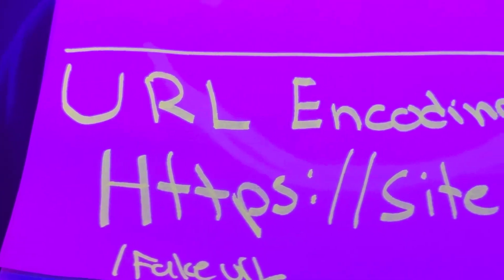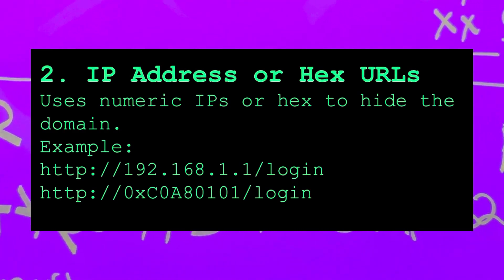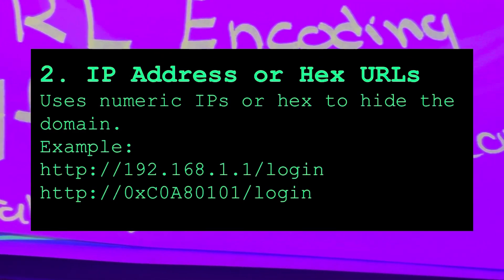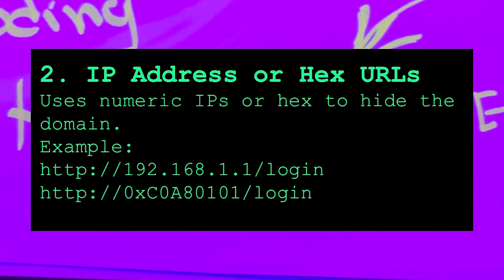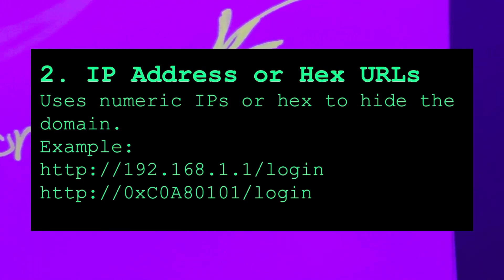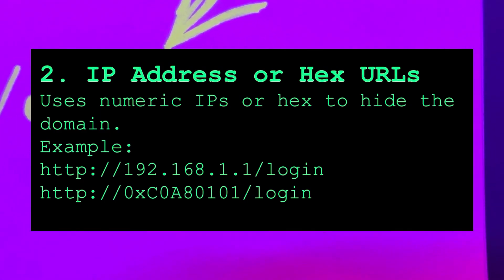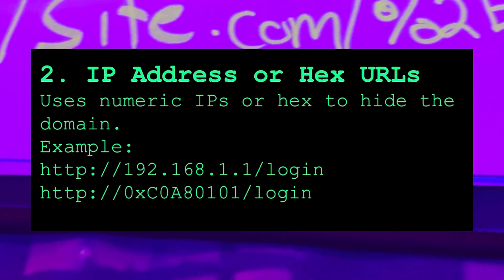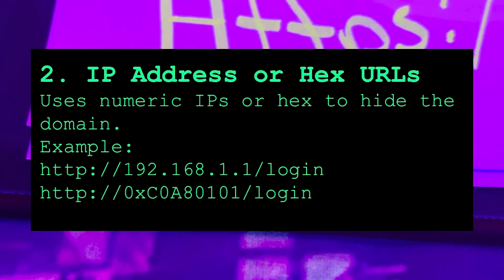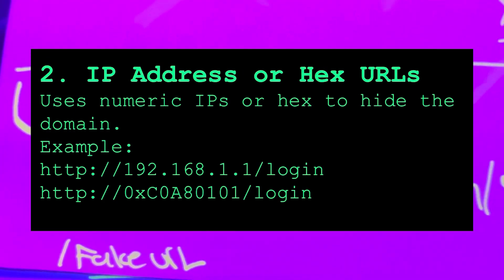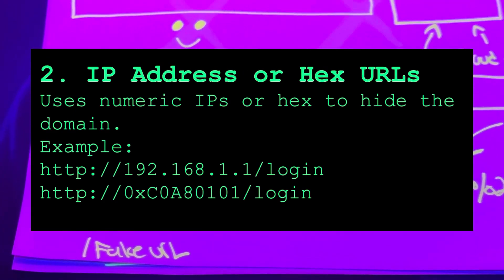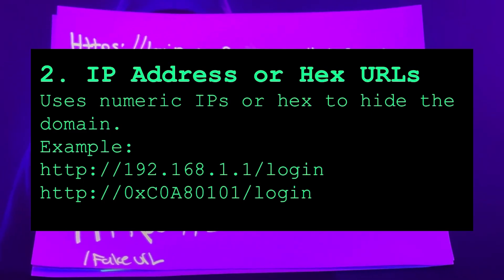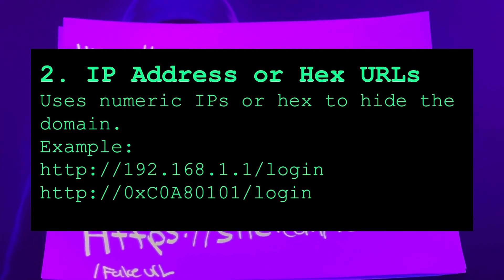IP address or hex URLs. Instead of showing a normal domain name, attackers use raw IP addresses or hexadecimal versions of IPs. Here are some examples. Why it works: it hides the identity of the site by removing familiar names. Non-technical users might not recognize it's unusual, and it might bypass some filters that are looking for domain-based blacklists.